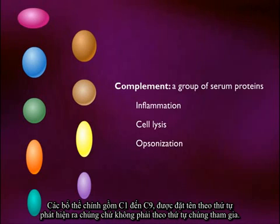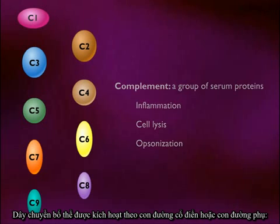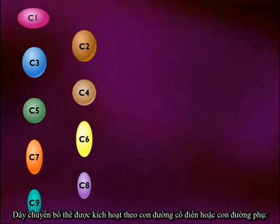The major components are C1 through C9, named in the order that they were discovered, not in the order in which they function. The complement cascade can be activated by the classical pathway or by the alternative pathway.